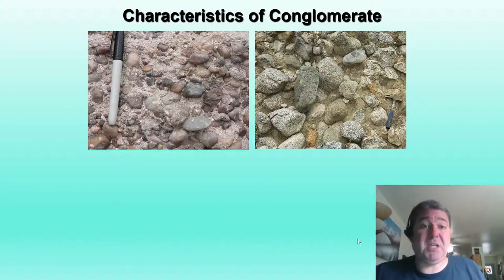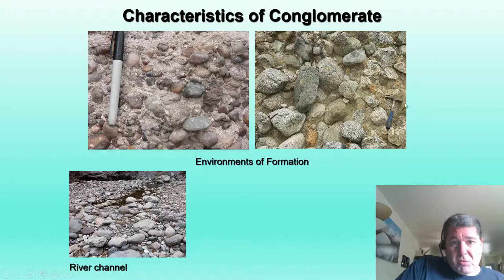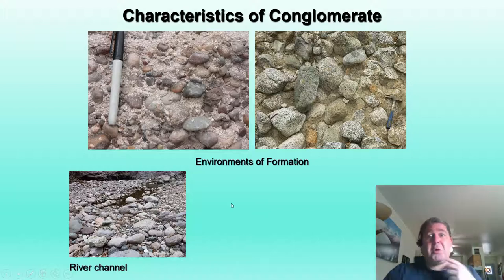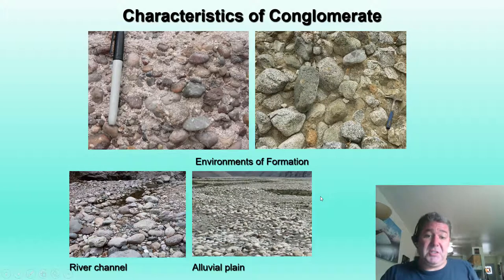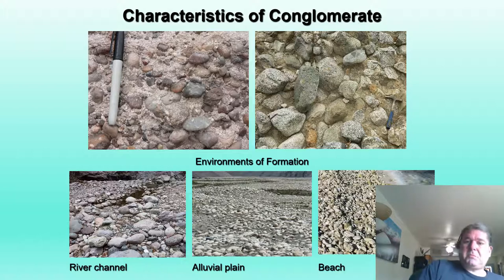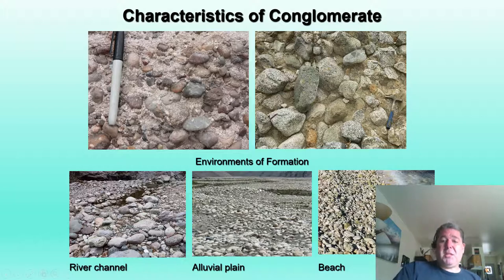Conglomerates show more distance of transport through rounding. The sorting and rounding can tell us we may have a river channel environment. This looks like a high-energy stream, as all the particles are fairly large with small particles being transported through. Conglomerates can also form on an alluvial plain deposited by a stream or glacier, or in high-energy beach deposits — like northern Lake Michigan or Lake Superior beaches, which have big rocks due to the high wave energy, especially in winter.